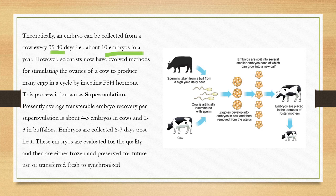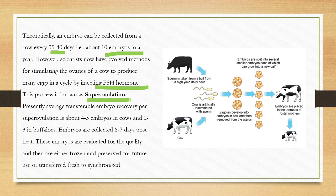Methods have evolved for stimulating the ovaries of a cow to produce many eggs in one cycle by injecting FSH hormone — follicle stimulating hormone. This process is called super ovulation, which can create four to five embryos in cows and two to three in buffaloes.